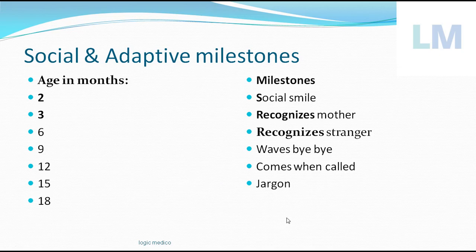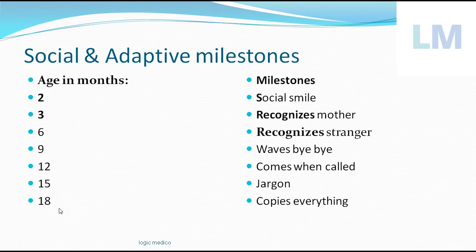At 18 months of age, the child copies everything. To remember: at 18 years of age you get a license to drive and you copy how other people drive. Similarly, at 18 months the child becomes a copycat — if the mother says something, the child repeats it. The entire family bursts into laughter. It copies whatever the parents or siblings do — 18 months, the copycat stage.